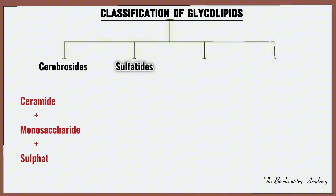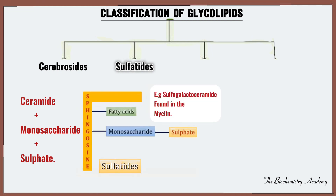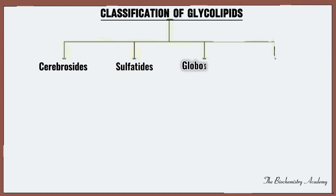Sulfatides are made up of a ceramide — that is, a sphingosine plus a fatty acid — plus a monosaccharide plus a sulfate group. This sulfate group is attached to the monosaccharide. An example of such sulfatides is the sulfogalactose ceramide, which is found in the myelin.